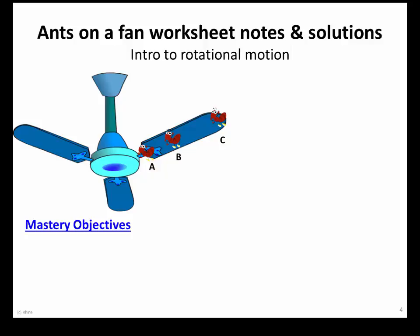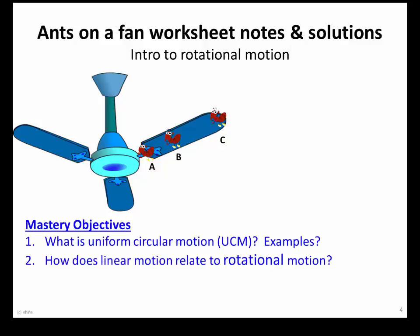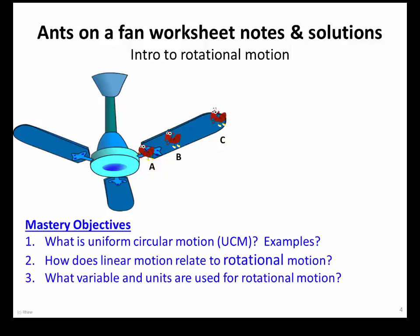Here are four mastery objectives we'll be working on as you go through this worksheet. First, you're going to figure out what uniform circular motion is and come up with your own examples. Next, you'll see some relationships between linear motion and rotational motion. You'll also learn about different variables and units used for rotational motion. And finally, you'll be learning about tangential velocity.